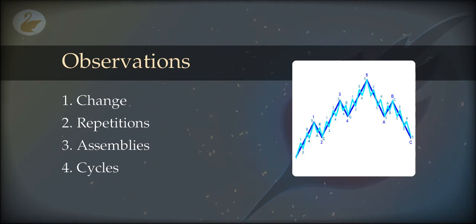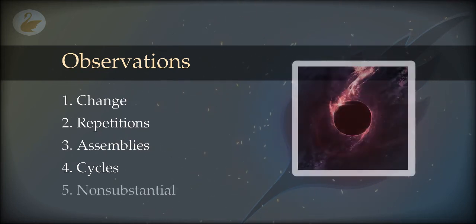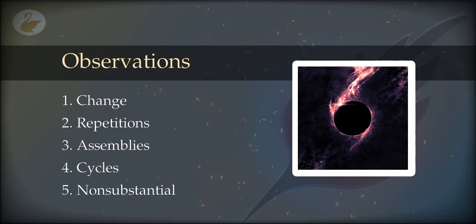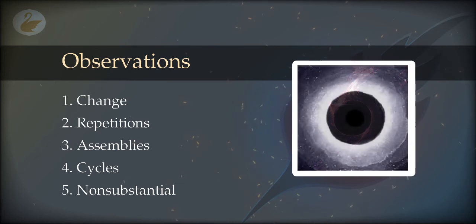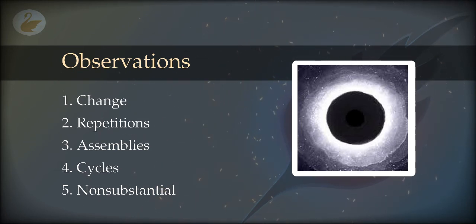And finally, we observe that if you take a very close look and try to divide the assemblies in any fashion possible, you end up with emptiness. You end up with only change that is not happening in a substance. There is only change. There is no substance — this is something which is very well established now, but it has been known for thousands of years. There is no matter. There is no substrate. There are only changes — repetitions of changes, cycles of changes, assemblies of changes — and they give rise to structures. Everything is made up of nothing.